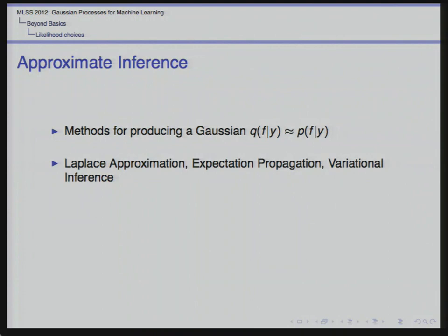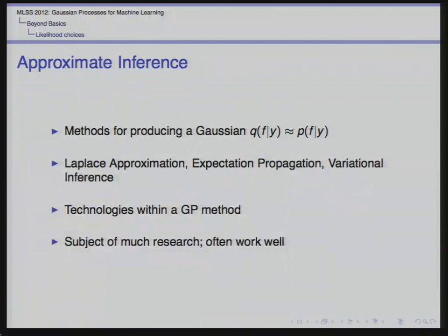Approximate inference is probably my favorite area of machine learning. You'll see familiar names: Laplace approximation, EP, variational methods. I'm not going to go into those specifically because it's a subject of a lot of research, and from the perspective of a GP, approximate inference is really a technology — something you want to bring to bear to help solve your GP problem. EP in particular works very well in the Gaussian process context.